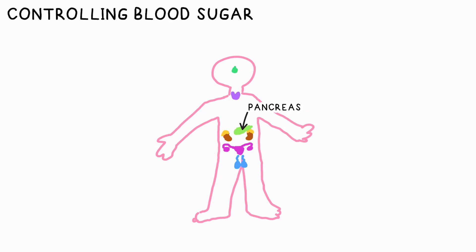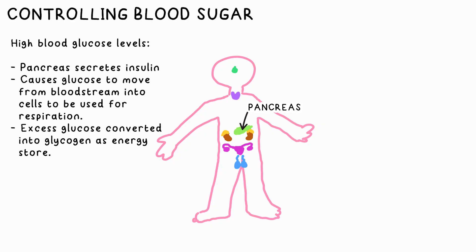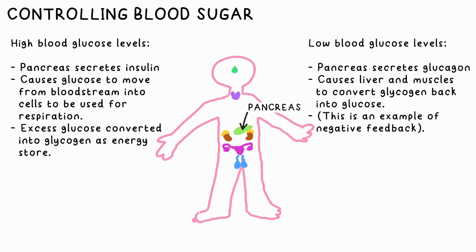Speaking of the pancreas, it's involved in making sure your blood glucose levels aren't too high or low. If they're too high, the pancreas secretes insulin, which causes glucose to move from the blood into your cells to be used for respiration. Any excess glucose can be converted into glycogen to store energy, and that's done by the liver. If these levels are too low, the pancreas produces another hormone called glucagon, which causes the liver and muscles to turn glycogen back into glucose ready to be used.